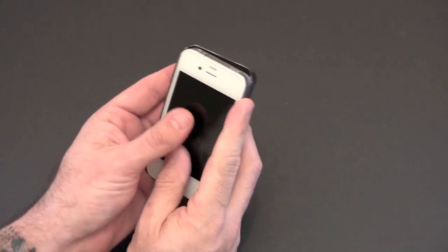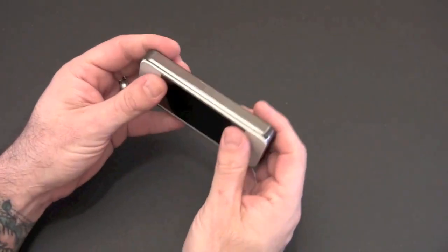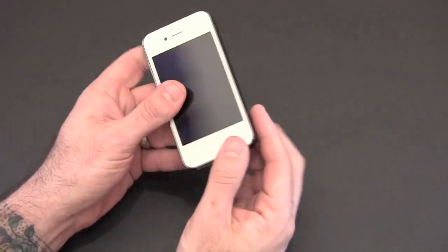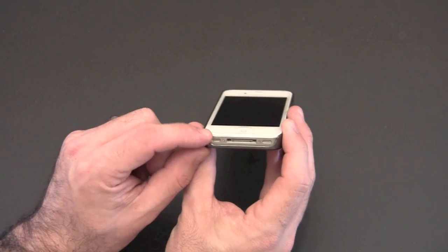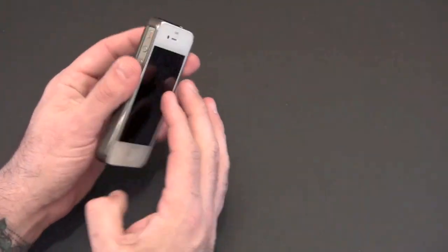To put the phone in, you go button side first. You line it all up and then you click it in. It does lock on to that little space in between the front glass and the antenna band and that results in a super tight fit.